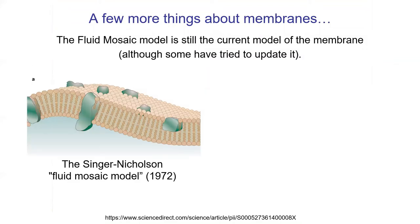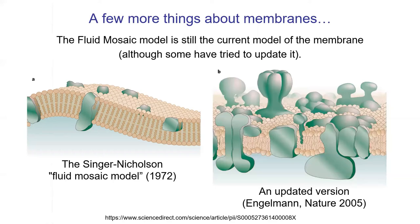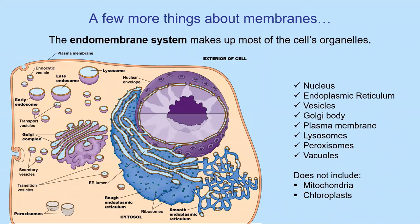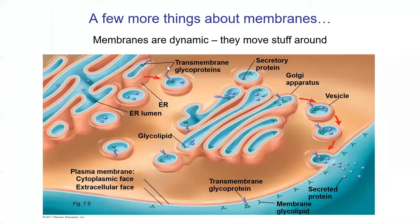To finish up this whole part about membranes — the fluid mosaic model is the basic model of the membrane, and while there are more modern updated models that fill in more details, the fluid mosaic model has stood the test of time. Membranes form many parts of the cell; we'll talk about organelles in topic six, including many components of the endomembrane system. Membranes are also very dynamic — they move things around and are never static. In topic ten, we'll talk about how mitochondria use their membrane layers to make ATP.